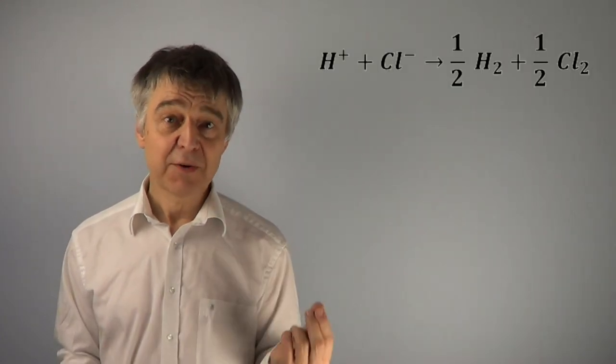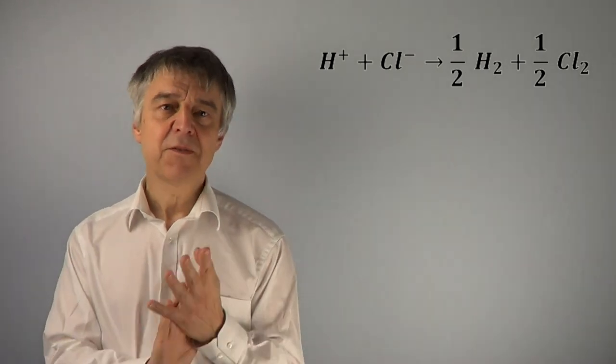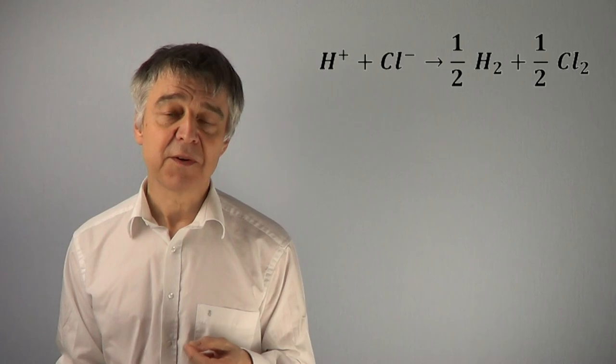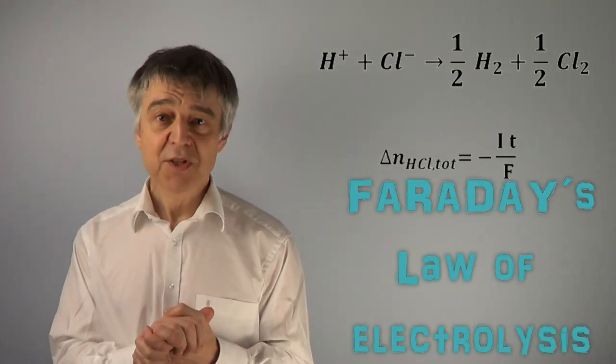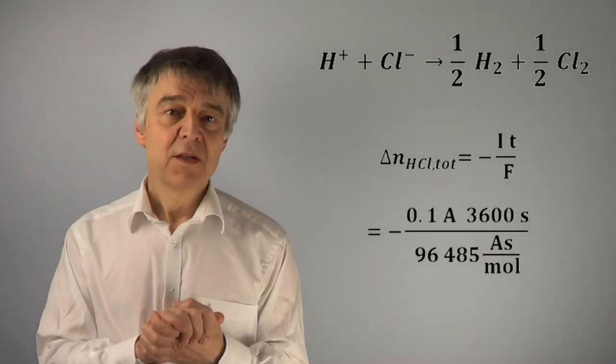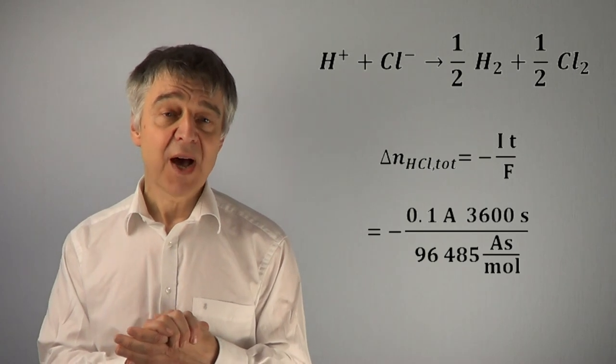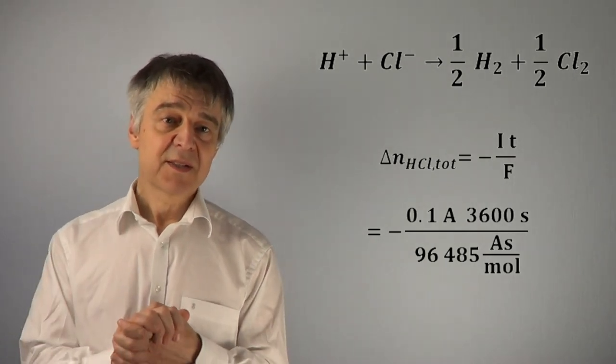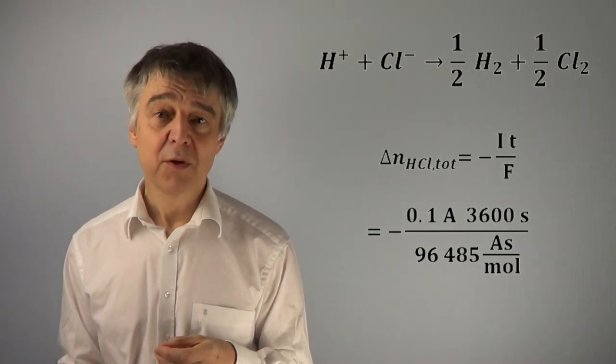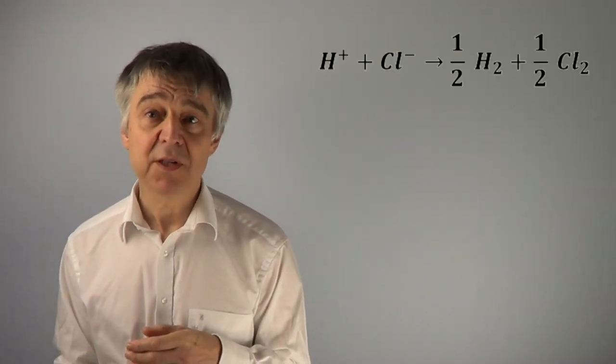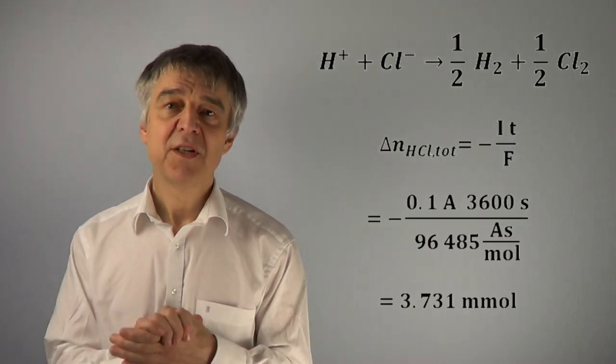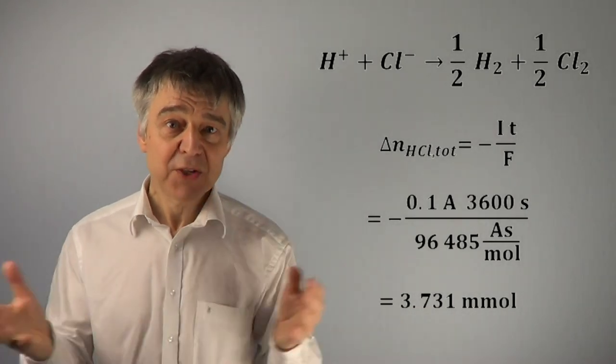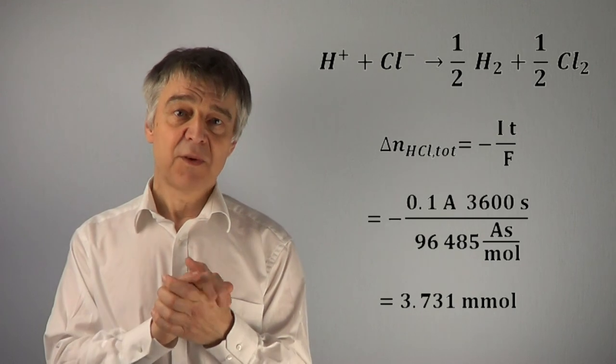When the electrolysis takes place, H+ and Cl- are converted to hydrogen and chlorine. The total amount of HCl which reacts can be calculated using Faraday's law: I times t over F. Plugging in 0.1 Amps times 3600 seconds divided by 96485 Coulombs per mole, in total 3.731 mmol of HCl are converted and will eventually disappear from the electrolysis cell.